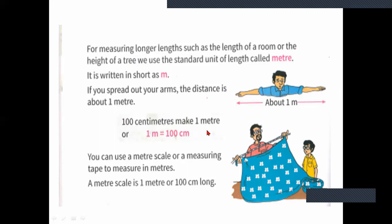Always remember: 100 centimeters make 1 meter, or 1 meter equals 100 centimeters. Meter is written as m and centimeter as cm. You can use a meter scale or a measuring tape to measure in meters. A meter scale is 1 meter or 100 centimeters long.